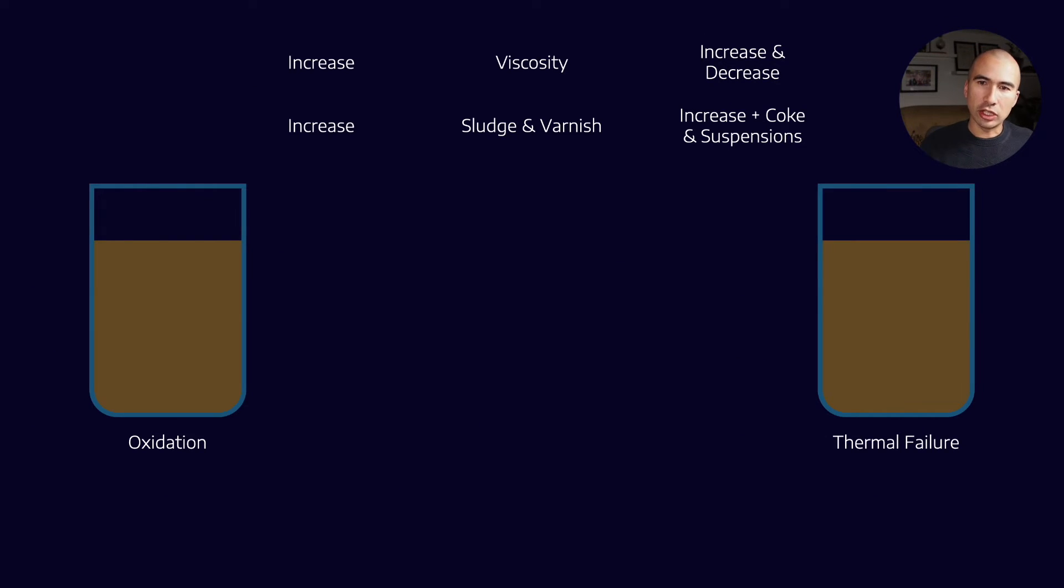And with sludge and varnish, the other nuance around thermal degradation is that I can also get the increase in coke as well as in suspension. So coke is like a black carbon, very typical in jet engines as an example. They form a lot of coke and you also form these grease-like suspensions. And so they are basically products of thermal failure.